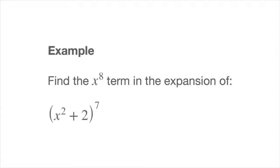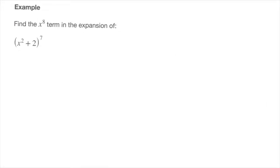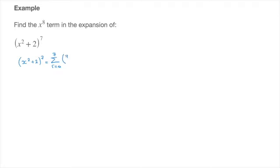To do that, let me start by moving this question to the side so we can get started. We know from the binomial expansion formula that we can write the following: x to the power of 2 plus 2, raised to the power of 7, is equal to the sum from r equals 0 up to 7 of the general term, which consists of the binomial coefficient 7r times x to the power of 2, raised to the power of 7 minus r, times 2 raised to the power of r. I like to call this product the general term, and I usually write it as tr.